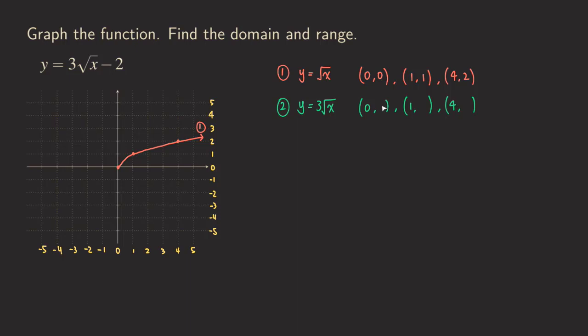So zero times three we still get zero. And then one times three we are going to get three and then two times three we're going to get six.